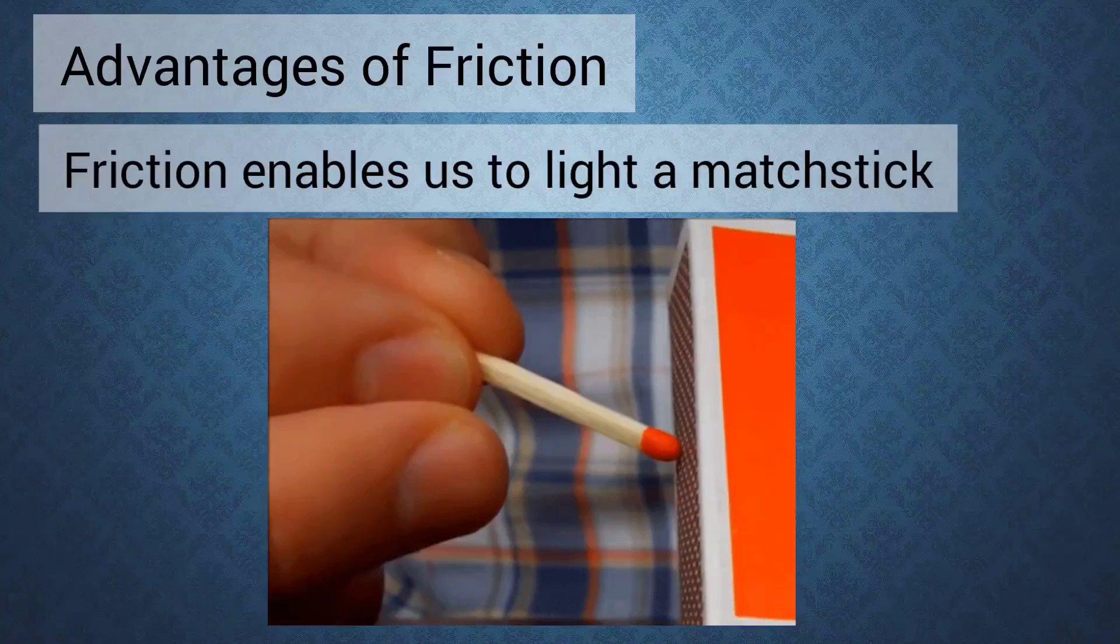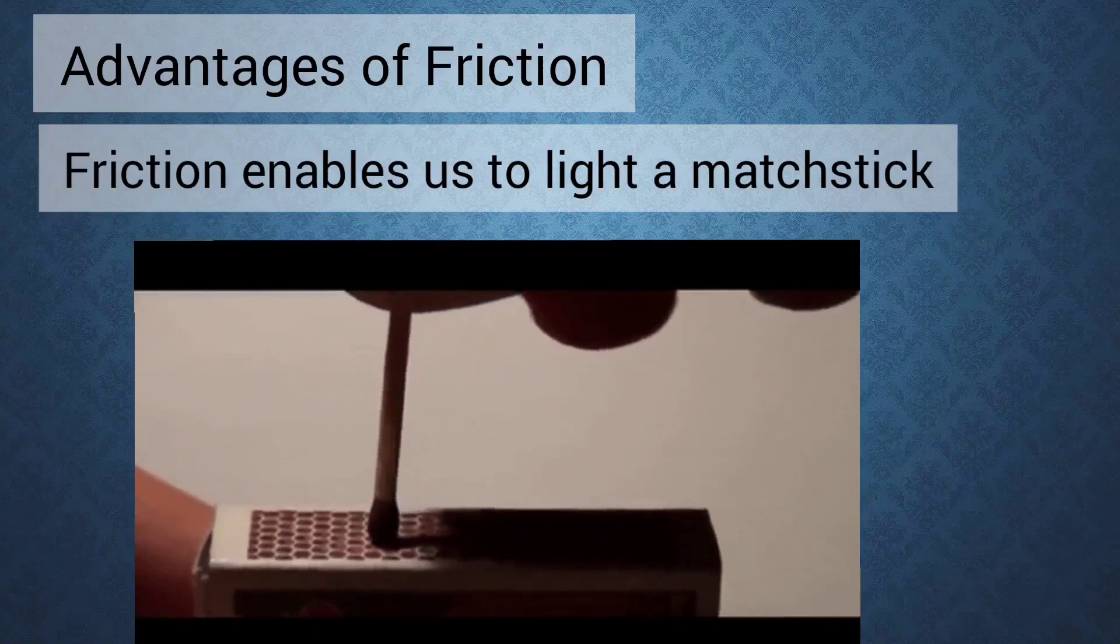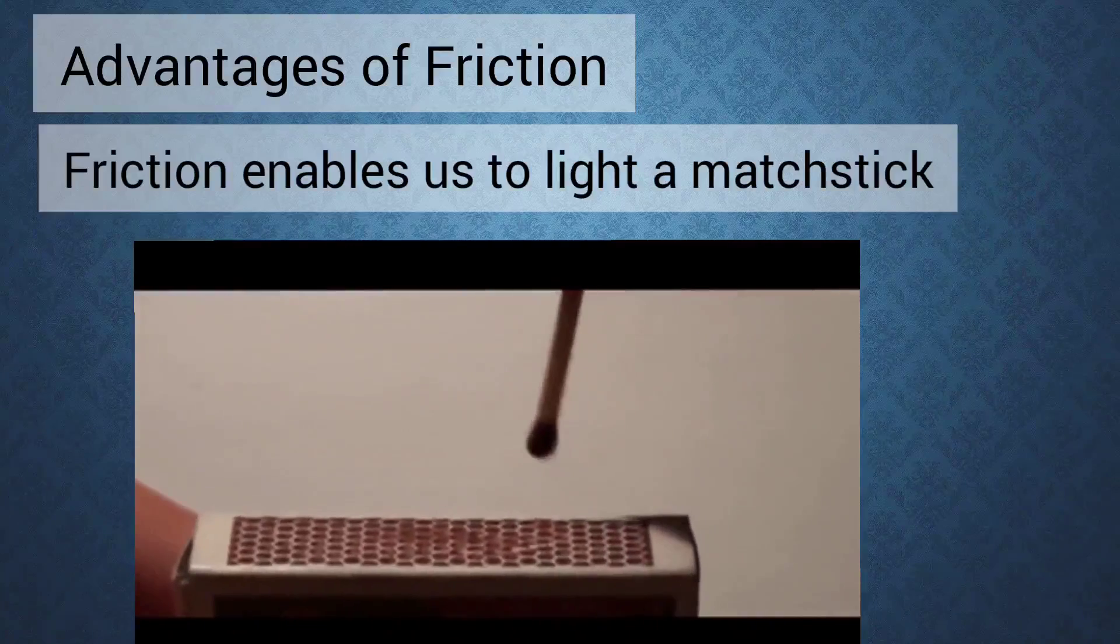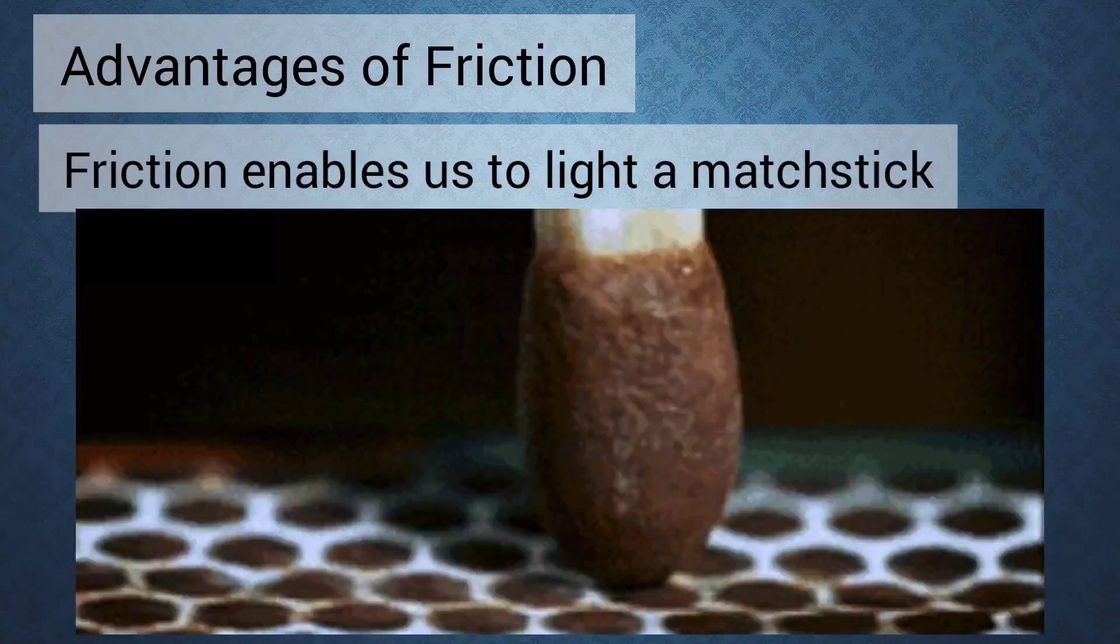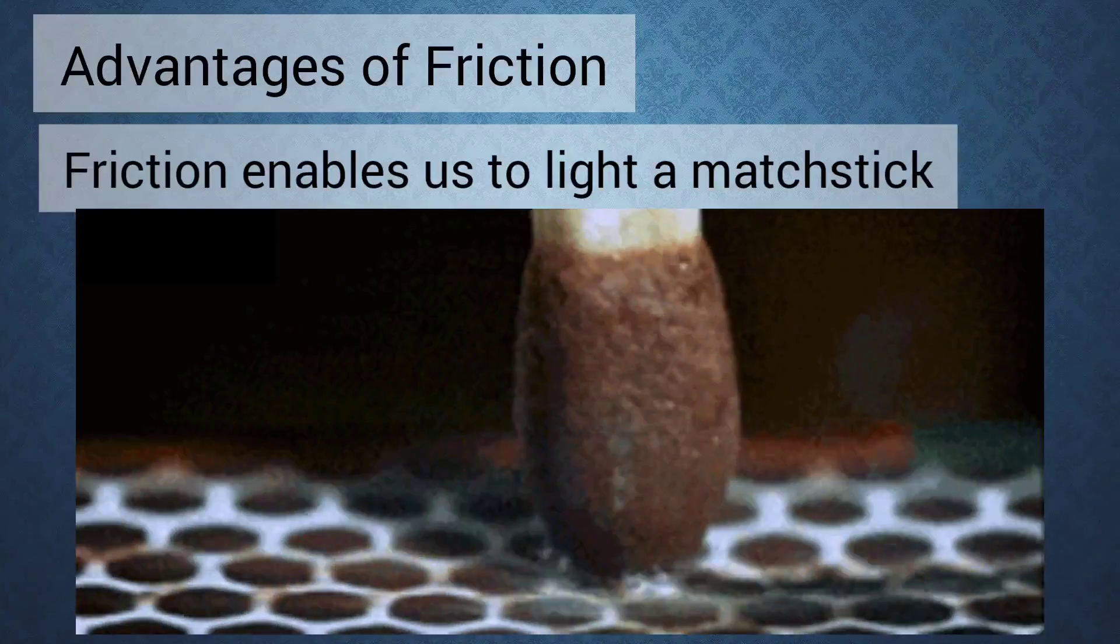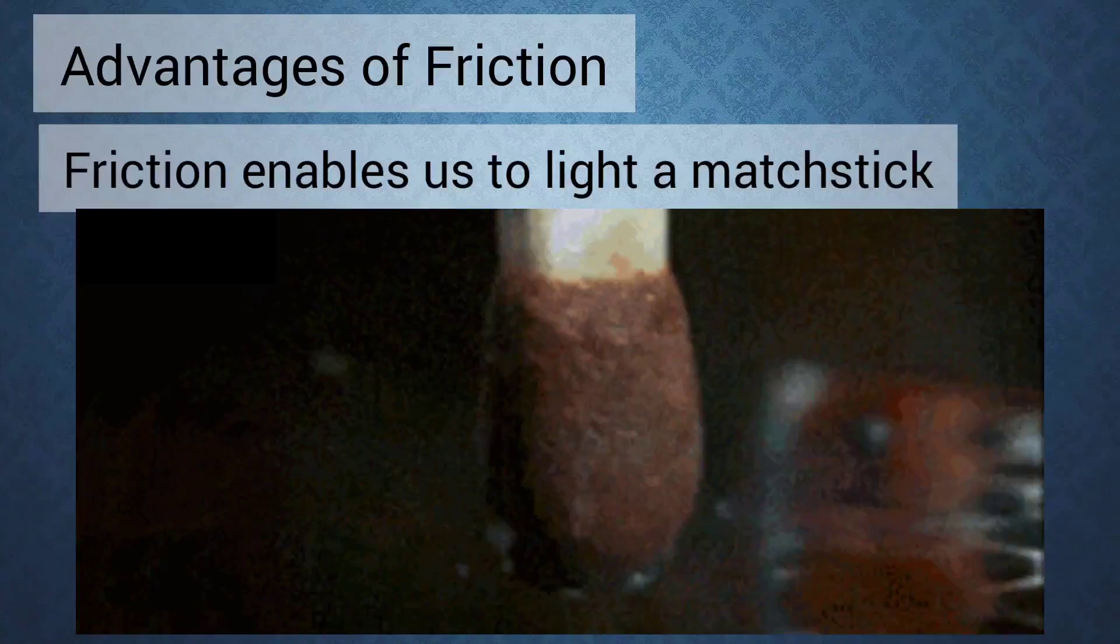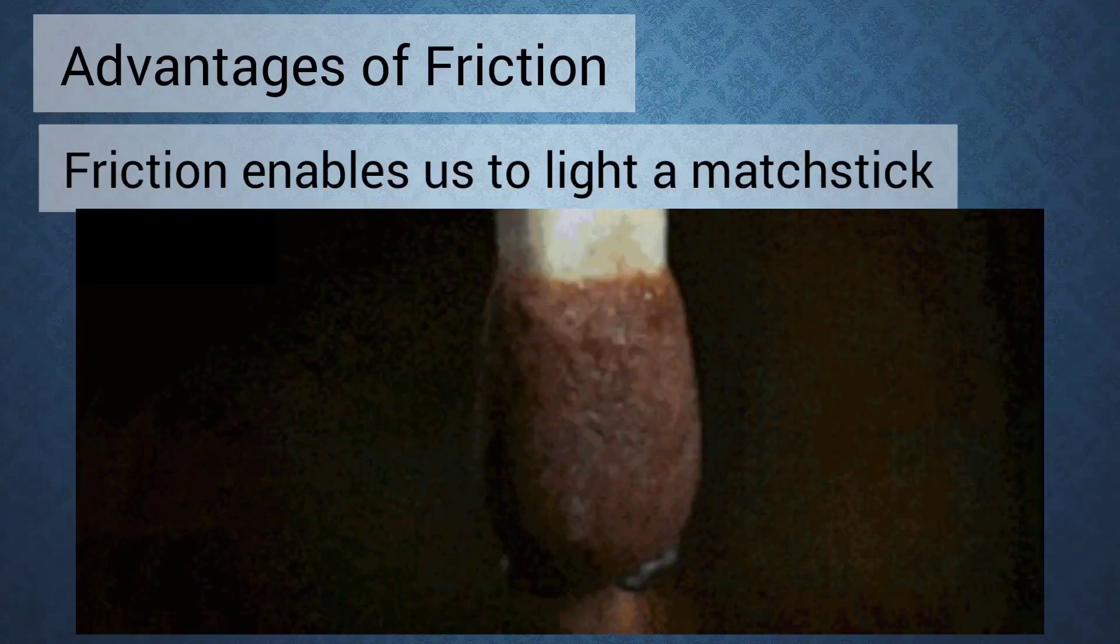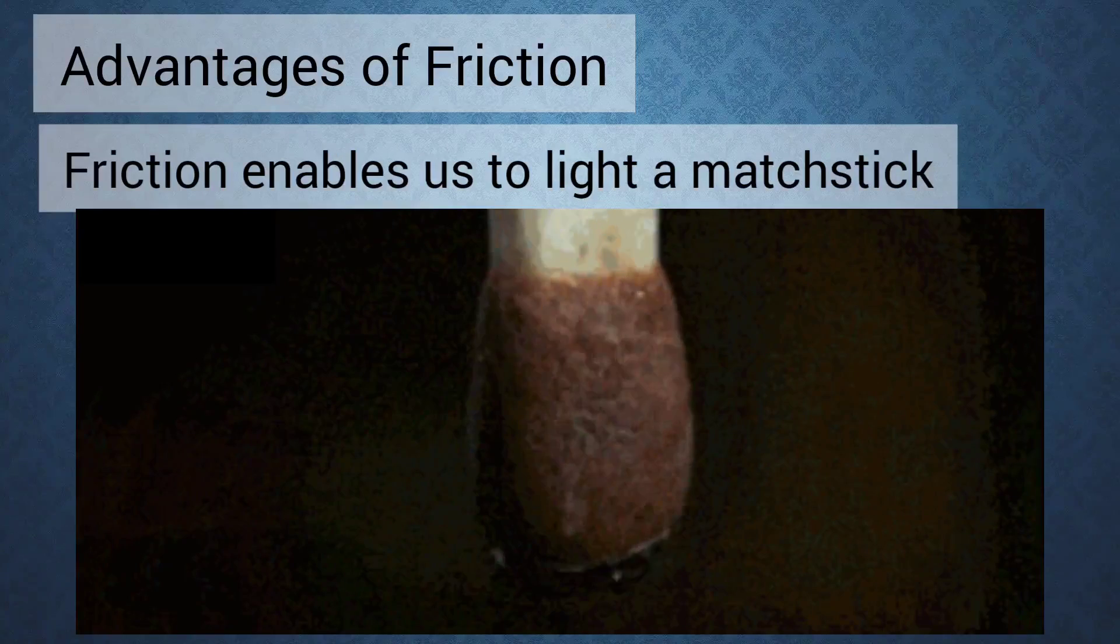Friction enables us to light a match. When we strike a match against the rough surface of a matchbox it catches fire. The force of friction raises the temperature of the match's head to such an extent that the chemicals in it catch fire to produce flame.